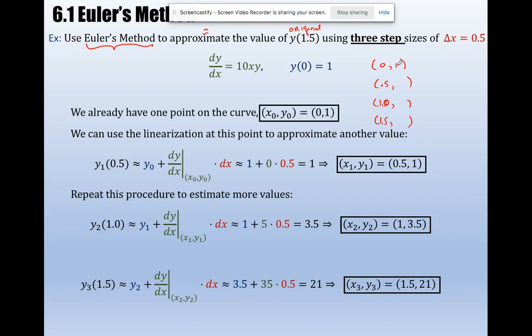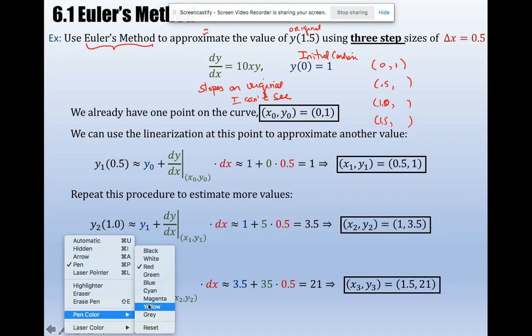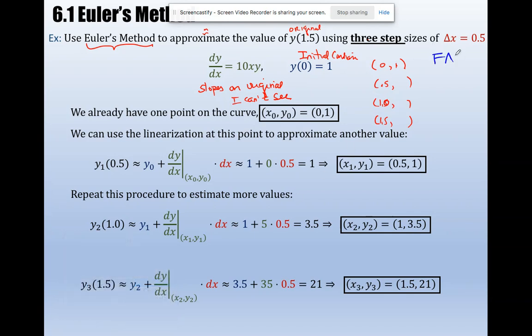Okay, so here is a point on the original. Use Euler's method by saying the actual point on the curve I don't see whose derivative is this. This is how I get the slope. Slope on original that I can't see. I only know how to generate slopes and I'm given an initial condition. This is my only fact.